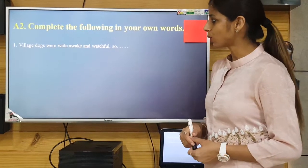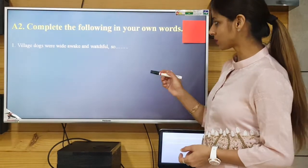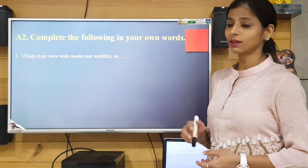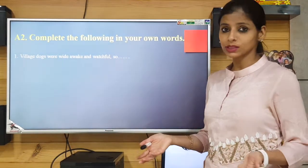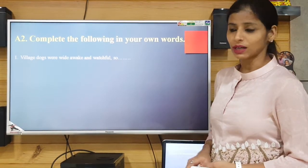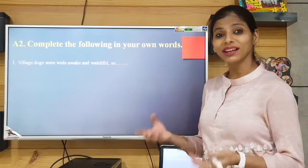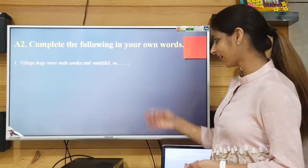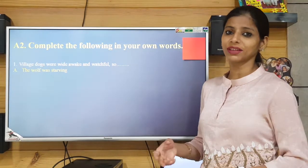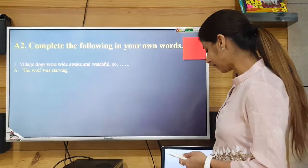The first one is: 'Village dogs were awake and watchful, so...' We need to tell the result — because the village dogs were awake, the wolf was not getting food to eat. So here I have written: 'so the wolf was starving,' meaning he was not getting food to eat — he was hungry.